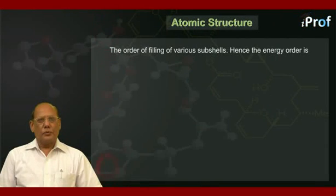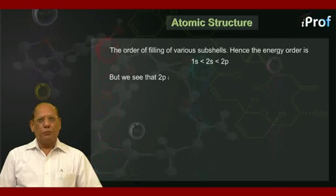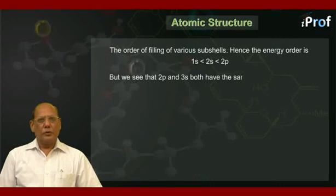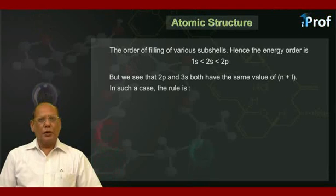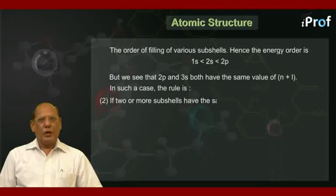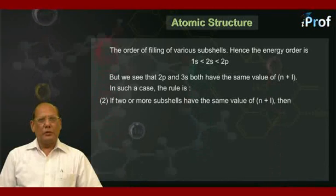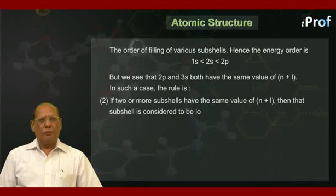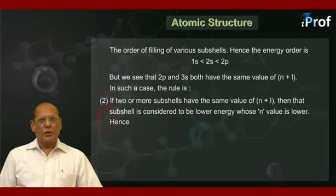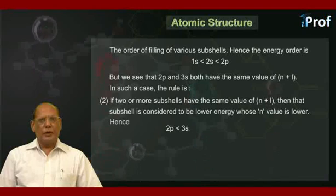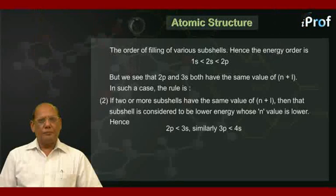Hence the energy order is 1s less than 2s less than 2p. But we see that 2p and 3s both have the same value of n plus l. In such a case, the rule is number two: if two or more subshells have the same value of n plus l, then that subshell is considered to be of lower energy whose n value is lower. Hence 2p is less than 3s. Similarly, 3p is lower than 4s.